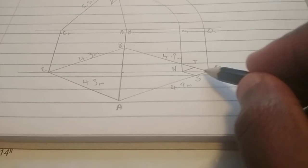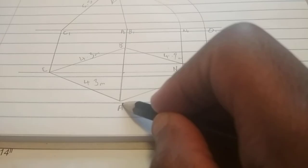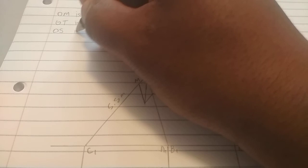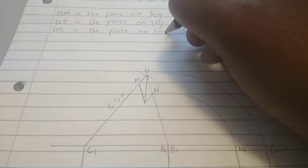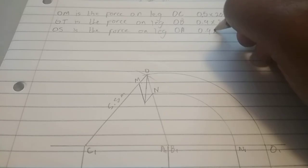Same here. O-S is the force on leg O-A. So, we write that down. O-S is the force on leg O-A. And it as well is 0.9 centimeters times 20, conversion from the scale.